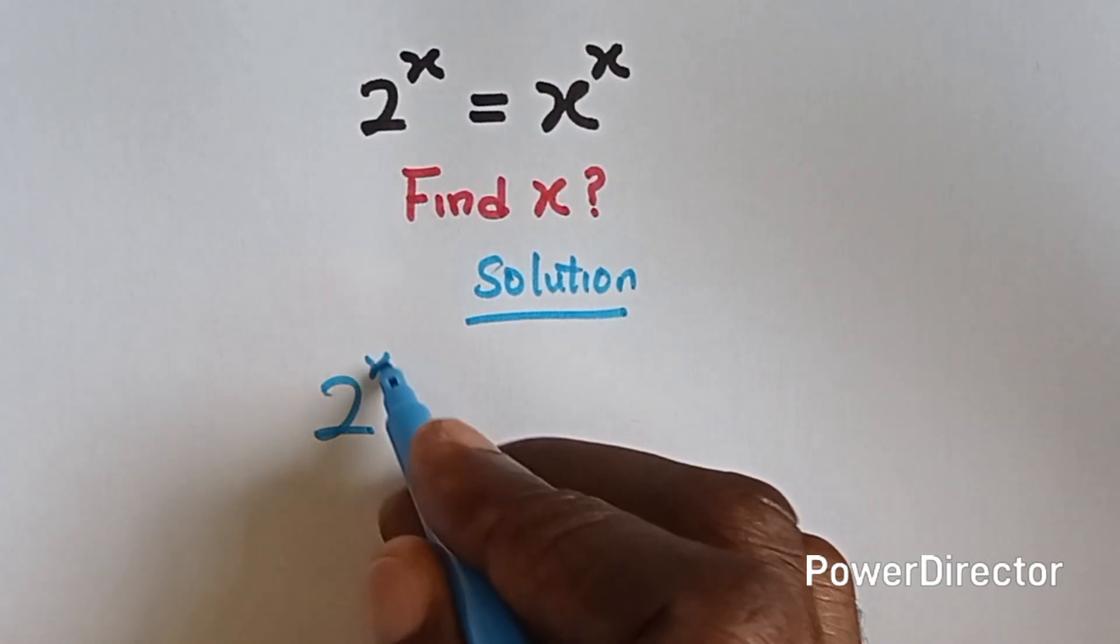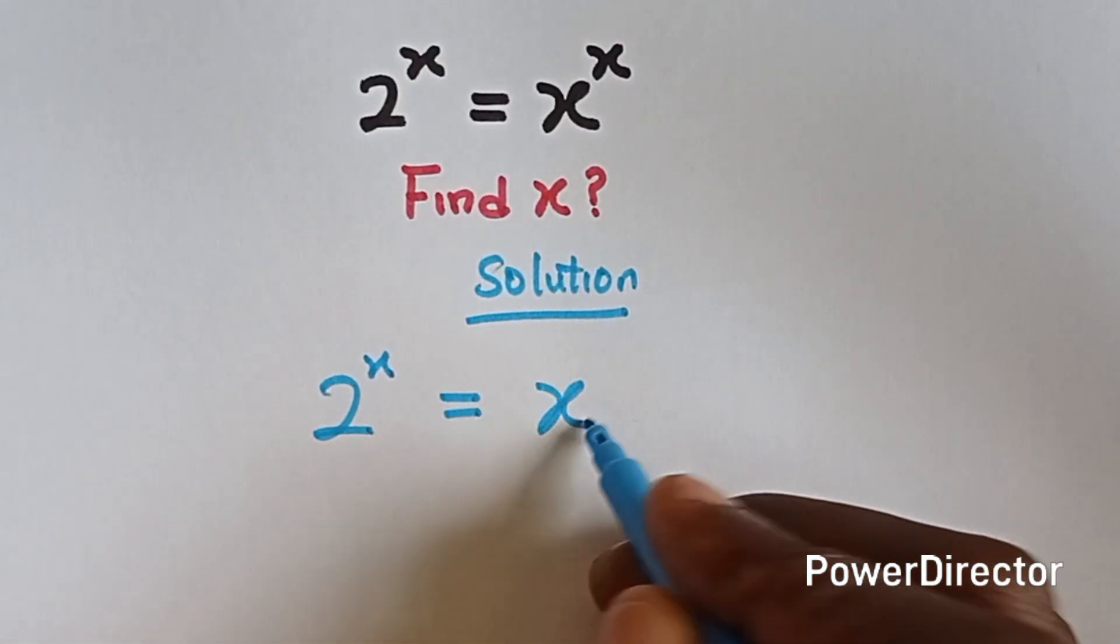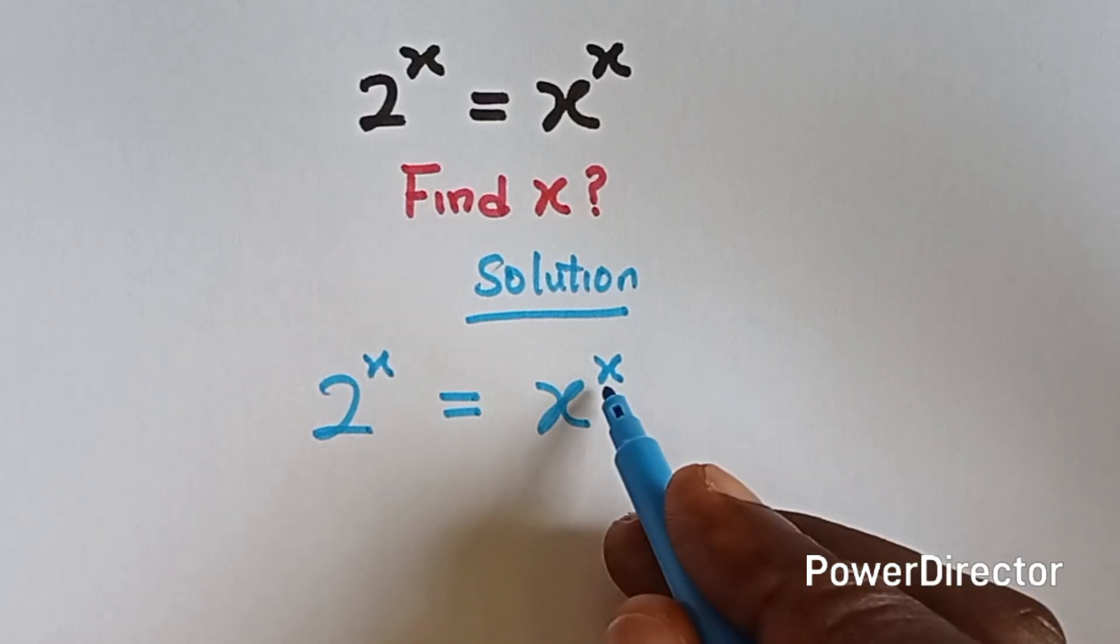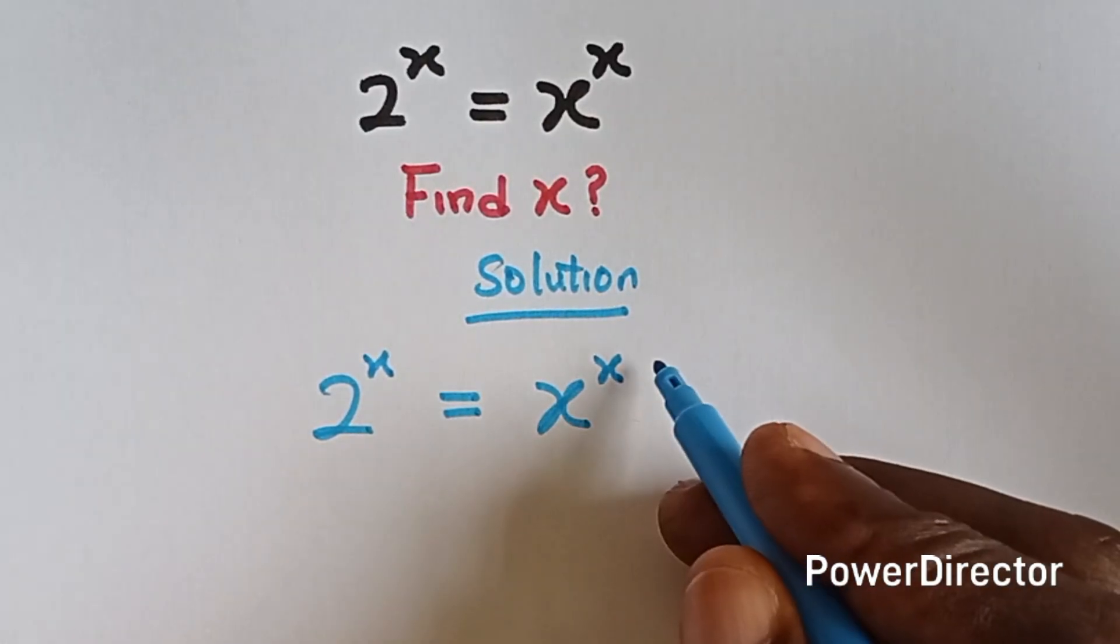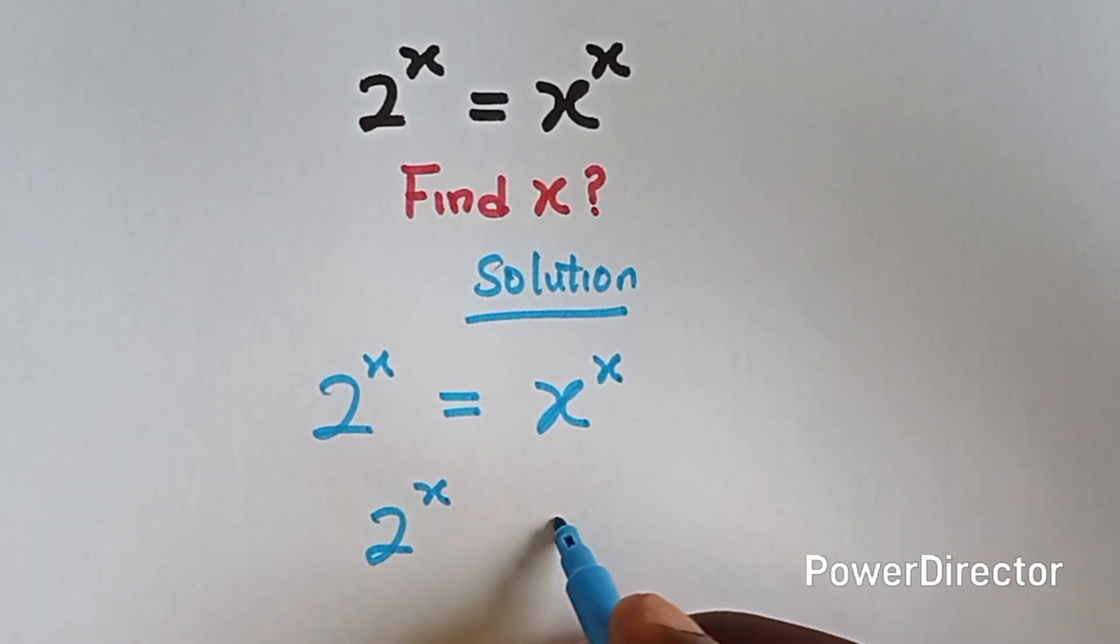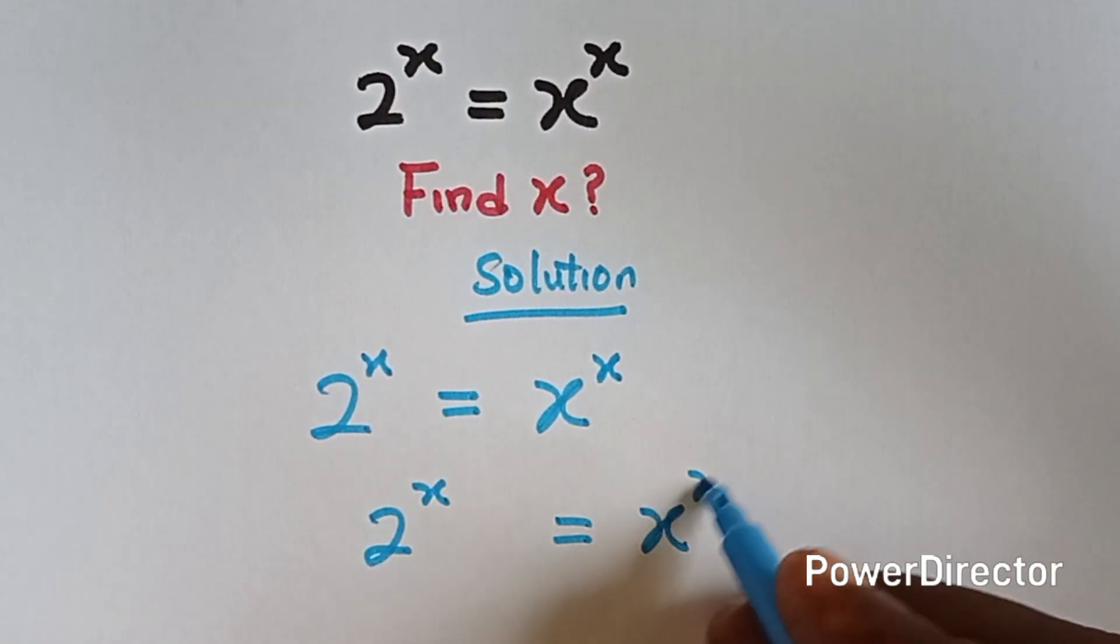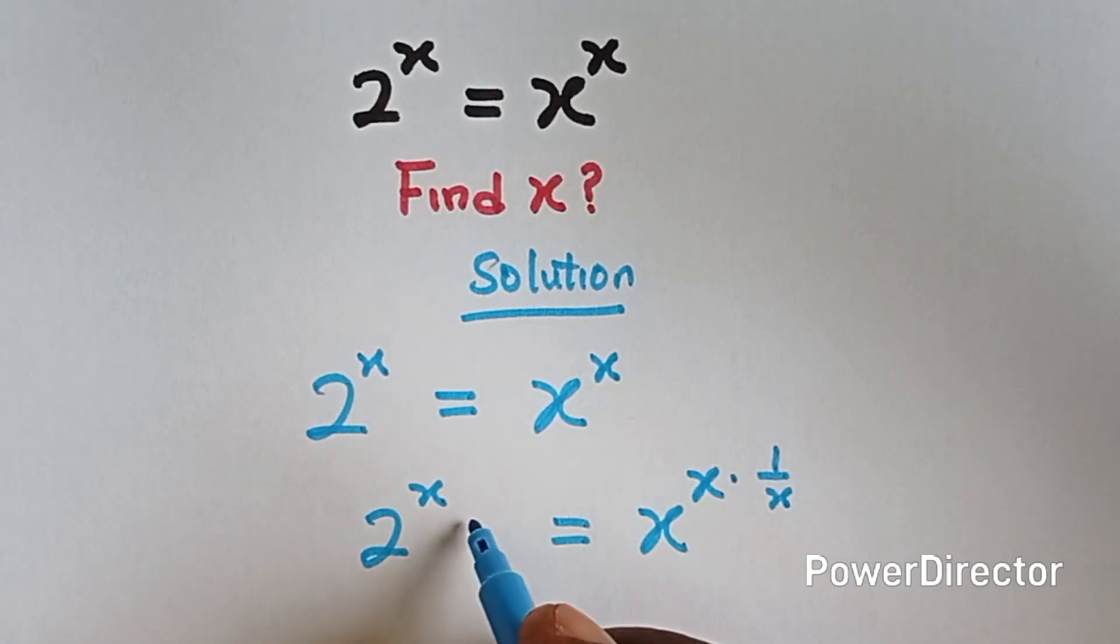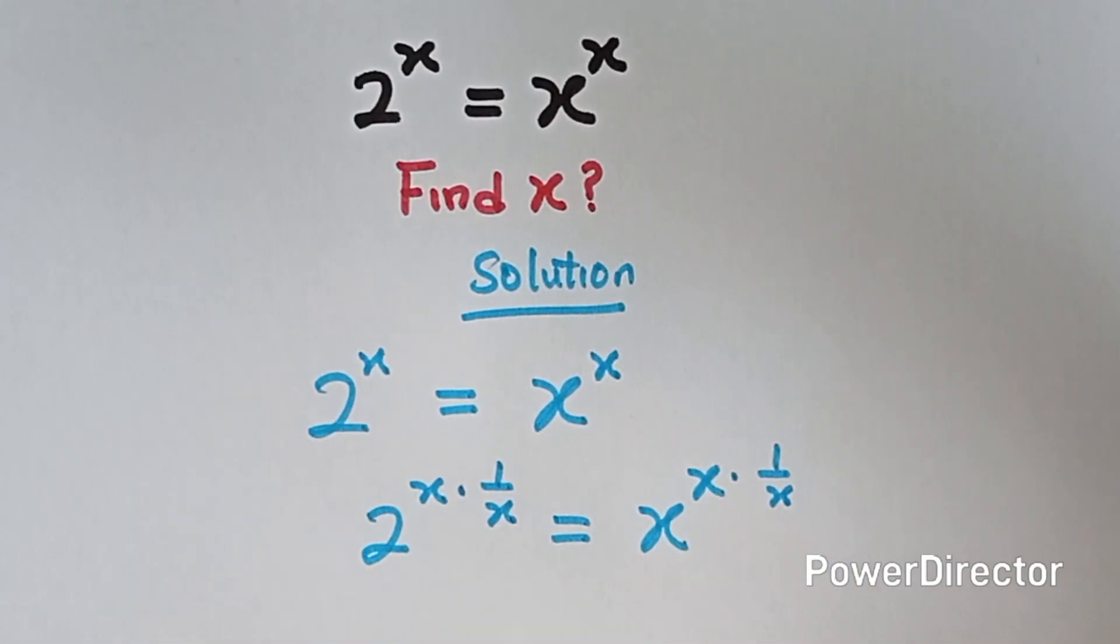Now what we are going to do is to multiply the powers by 1 over x so that we can cancel out this x. So it means this is multiplied by 1 over x. And also whatever we do here we have to do here, this is also multiplied by 1 over x.